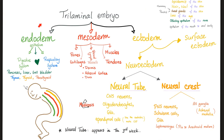Trilaminar embryo: endoderm, mesoderm, ectoderm. Tell me about the endoderm: the epithelium of your gut, the epithelium of your respiratory system, and parts of the heart. Endoderm will also give you many auxiliary features of the gut: pancreas, liver, gallbladder, thymus gland, thyroid gland, and parathyroid gland.